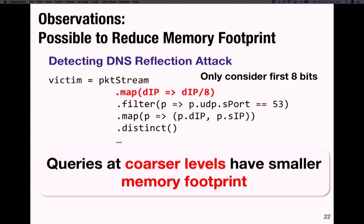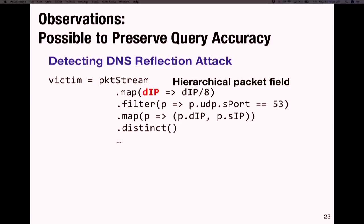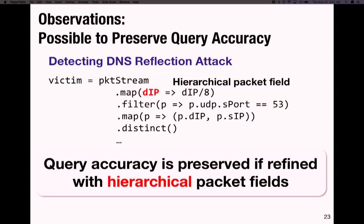You might wonder about query accuracy — will we still find the needles we're interested in? We made an additional observation: if the fields used for refinement have a hierarchical structure, we will not miss the needles. It is possible to preserve query accuracy when using hierarchically structured fields. Luckily, for most of our queries, the fields used for stateful operators — destination IP and source IP — have hierarchical structure.